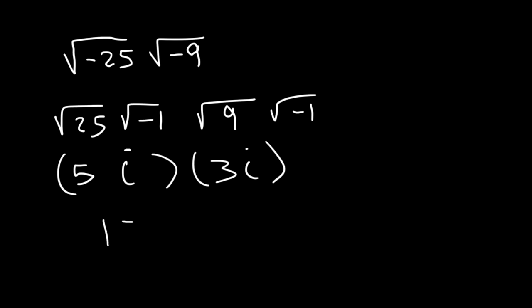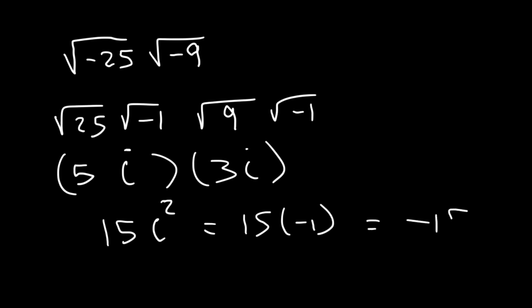5 times 3 is 15. i times i is i squared, so this is 15 times negative 1. The final answer is negative 15.